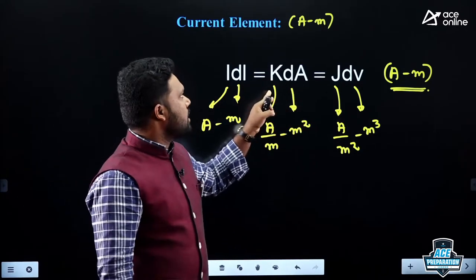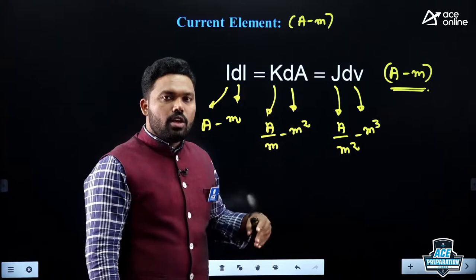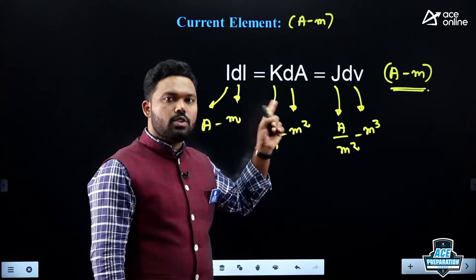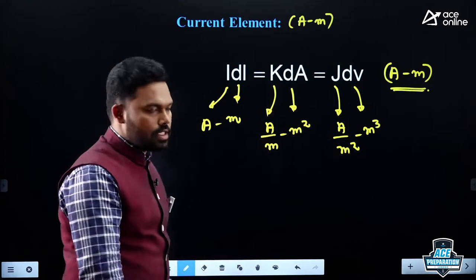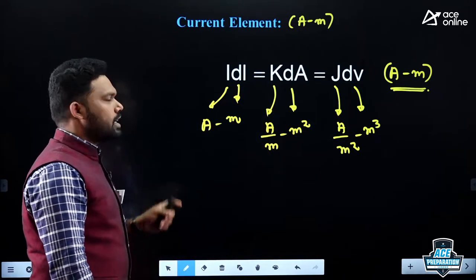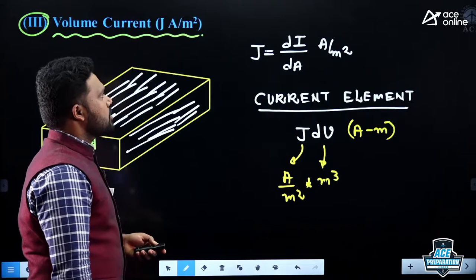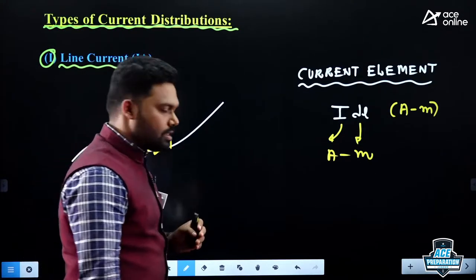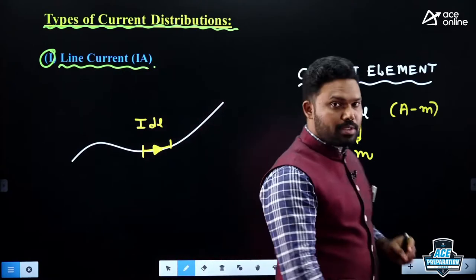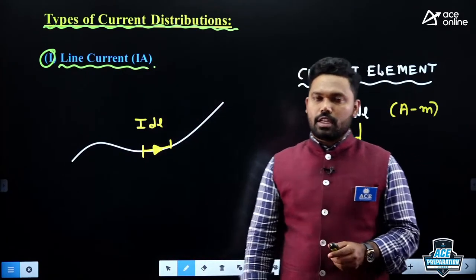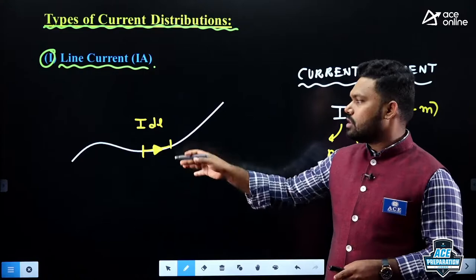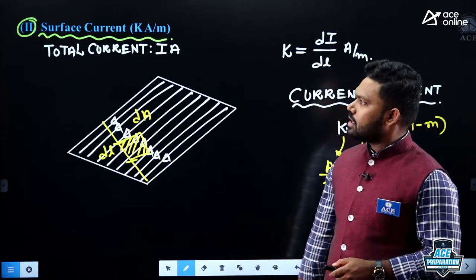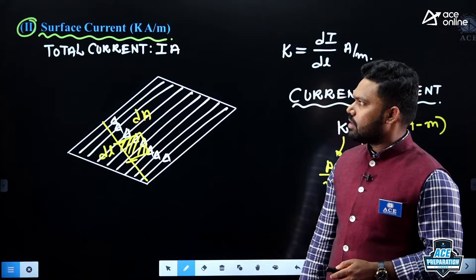To summarize: if current flows in a line, it is line current with units of ampere. If current flows in a sheet, it is sheet current with units of ampere per meter. If current flows in a volume, it is volume current density with units of ampere per meter squared. In all cases the current element units are ampere-meter. This current element is also useful in the Lorentz force relation and can be equated to Q·v. Our main interest here is dealing with different types of currents.